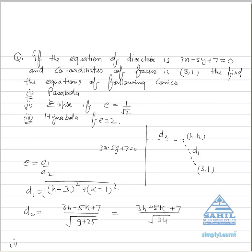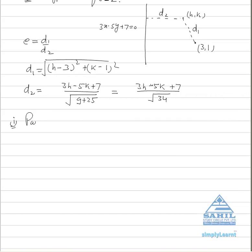Now for the equation of parabola we know that e equals 1, it means what? d1 equals d2. It means that equation of parabola is (h minus 3) whole square plus (k minus 1) whole square equals (3h minus 5k plus 7) upon root 34.